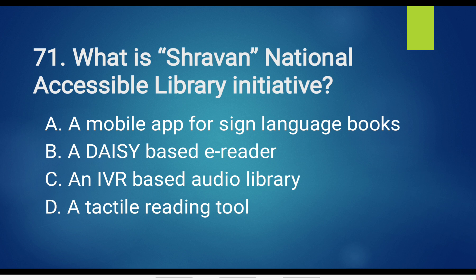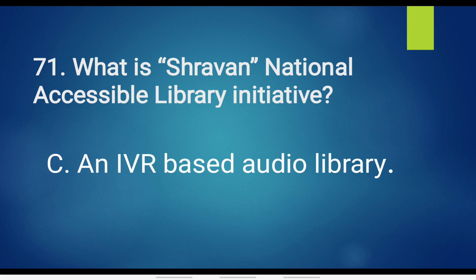Question No. 71. What is Shravan National Accessible Library Initiative? Option A. A Mobile App for Sign Language Books. Option B. A DIC-based e-reader. Option C. An IVR-based audio library. Option D. A Tactile Reading Tool. The answer is Option C. An IVR-based audio library.